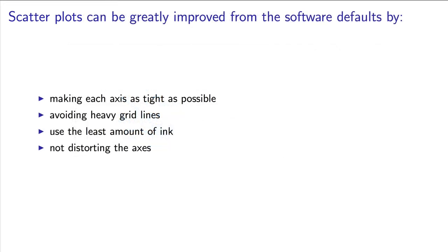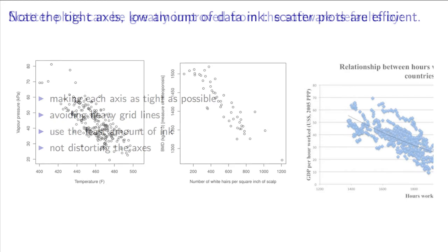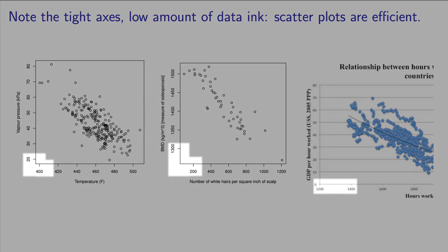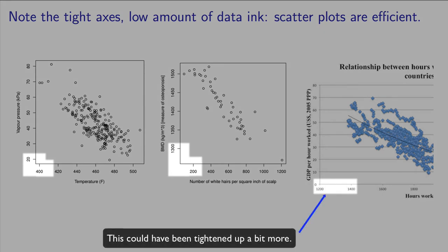Scatter plots are a great tool to reduce data ink. To start with, they show two variables on two axes. To improve data ink on a scatter plot, make your axes fit the data tightly.